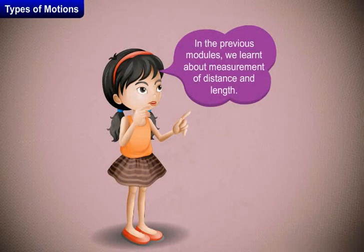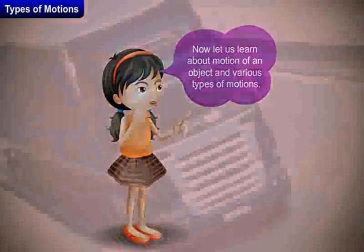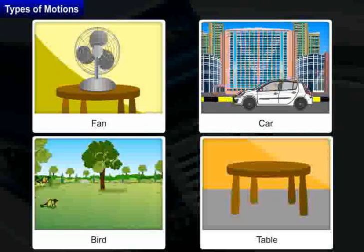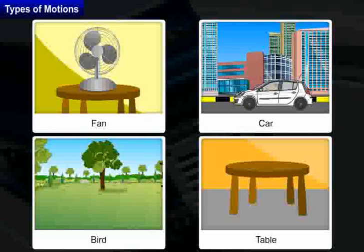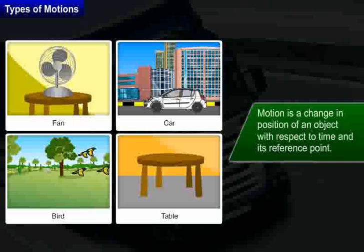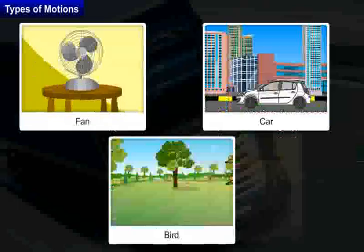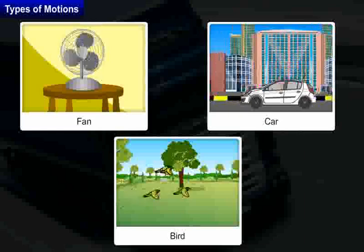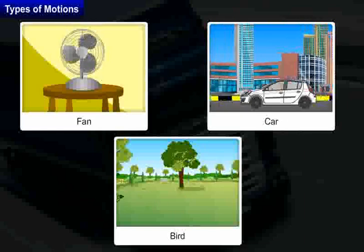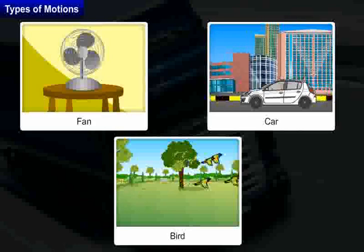In the previous modules, we learnt about measurement of distance and length. Now, let us learn about motion of an object and various types of motions. We see several objects around us. Some objects are in motion and some objects are at rest. Motion is a change in position of an object with respect to time and its reference point. Objects like a moving fan, flying bird, and moving vehicles are said to be in motion as these objects change their positions with respect to time.